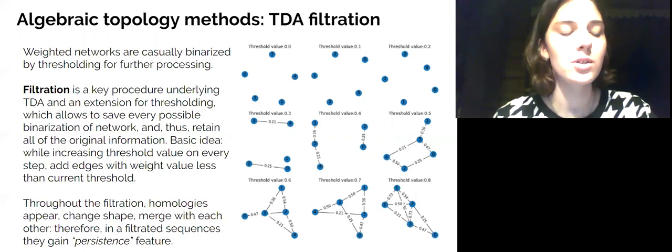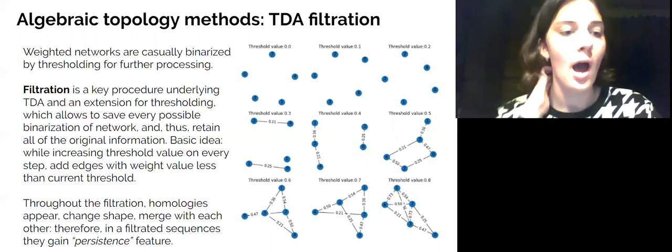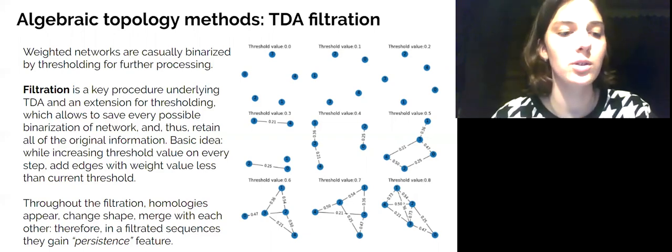The classic approach is thresholding, when we binarize network by leaving only significant connections. However, it always comes with a certain information loss.